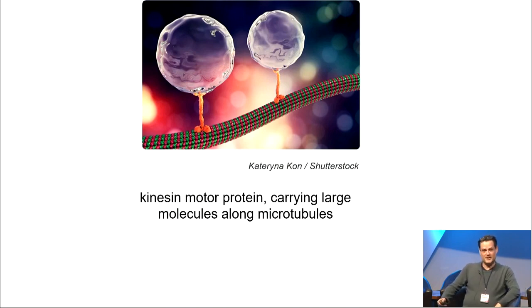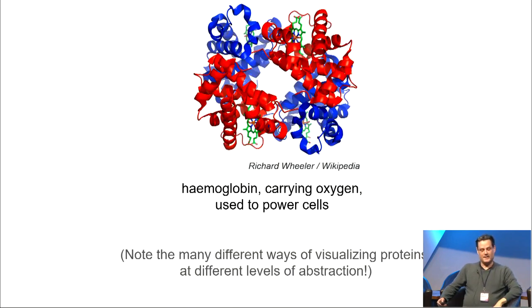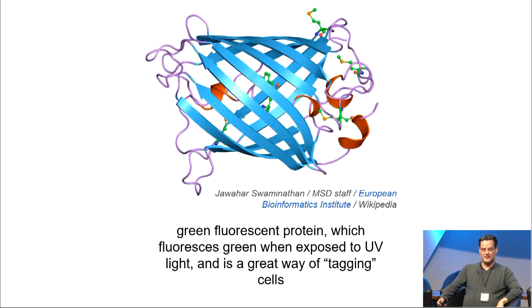They're these beautiful little nanoscale molecular machines. Here's the kinesin motor protein, which is capable of carrying big molecules. Those are the big globes along microtubules throughout the cells in your body. Here's hemoglobin, which carries oxygen, which is used to power cells, respiration. Here's green fluorescent protein, which, when you expose it to UV light, it will fluoresce green. It's used in, or jellyfish is where it was discovered, and it's also now used as a way of tagging cells, so you can follow where they are.